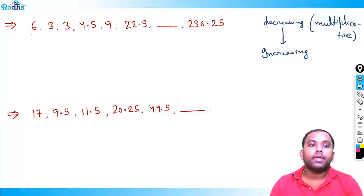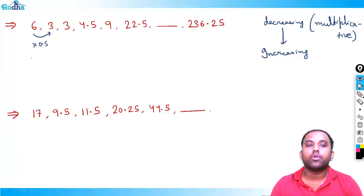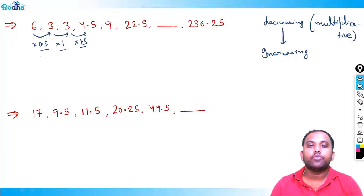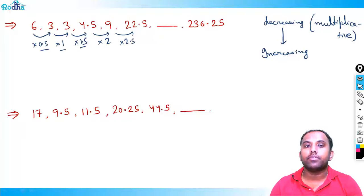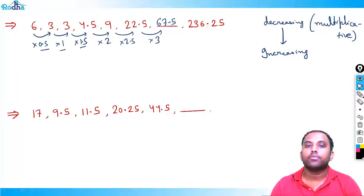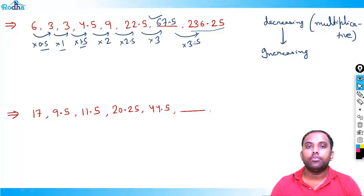Applying the pattern: 4.5×2=9, 9×2.5=22.5, 22.5×3=67.5, and 67.5×3.5=236.25 — which confirms the pattern. The missing term is 67.5.